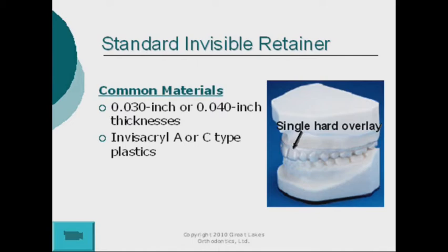Invisicryl A is the firmer and clearer of the two materials. It possesses great thermal forming characteristics with a short heating cycle. Invisicryl C is more resilient than the A type material, but does not have the clarity or superb thermal forming characteristics. Heating and cooling times are increased compared to the A material.